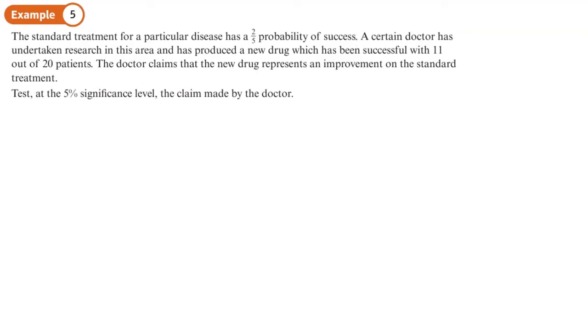The standard treatment for a particular disease has a two-fifths probability of success. A certain doctor has undertaken research in this area and has produced a new drug which has been successful in 11 out of 20 patients. The doctor claims the new drug represents an improvement on the standard treatment. Test at the 5% significance level the claim made by the doctor.